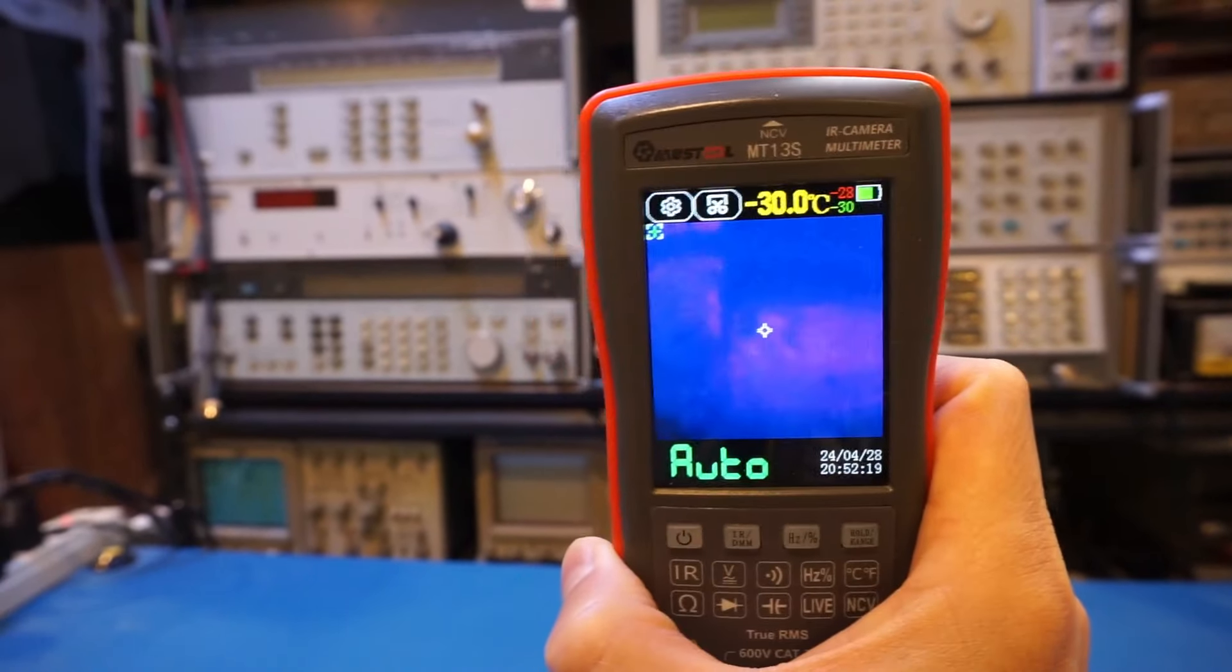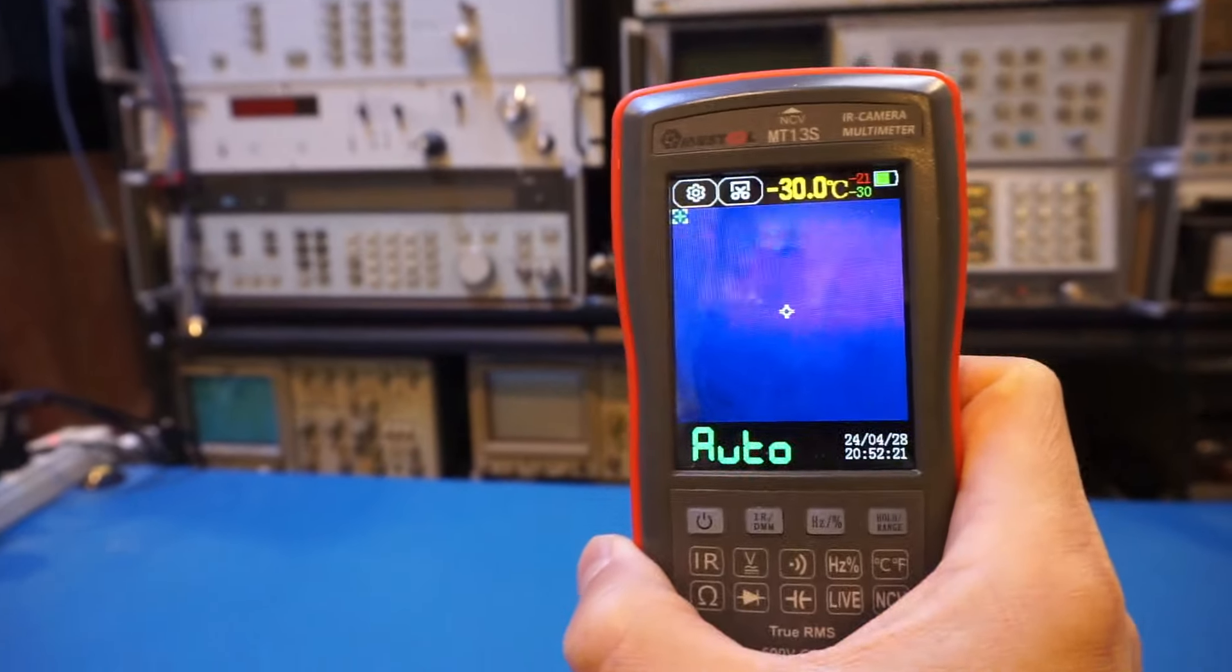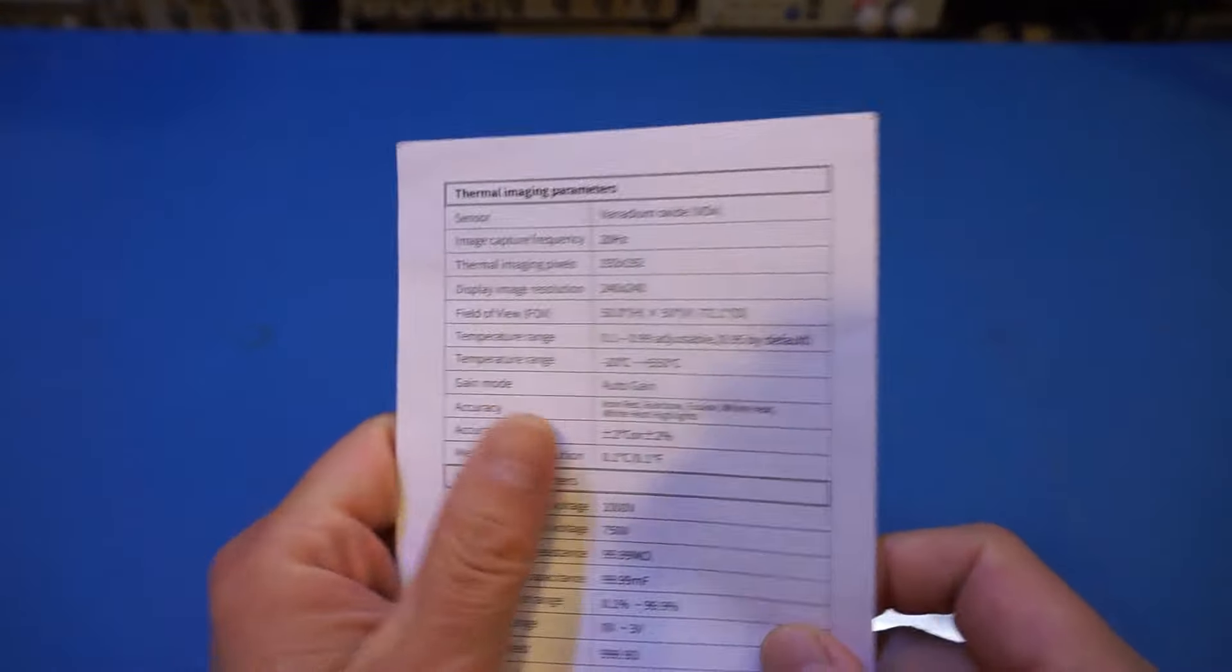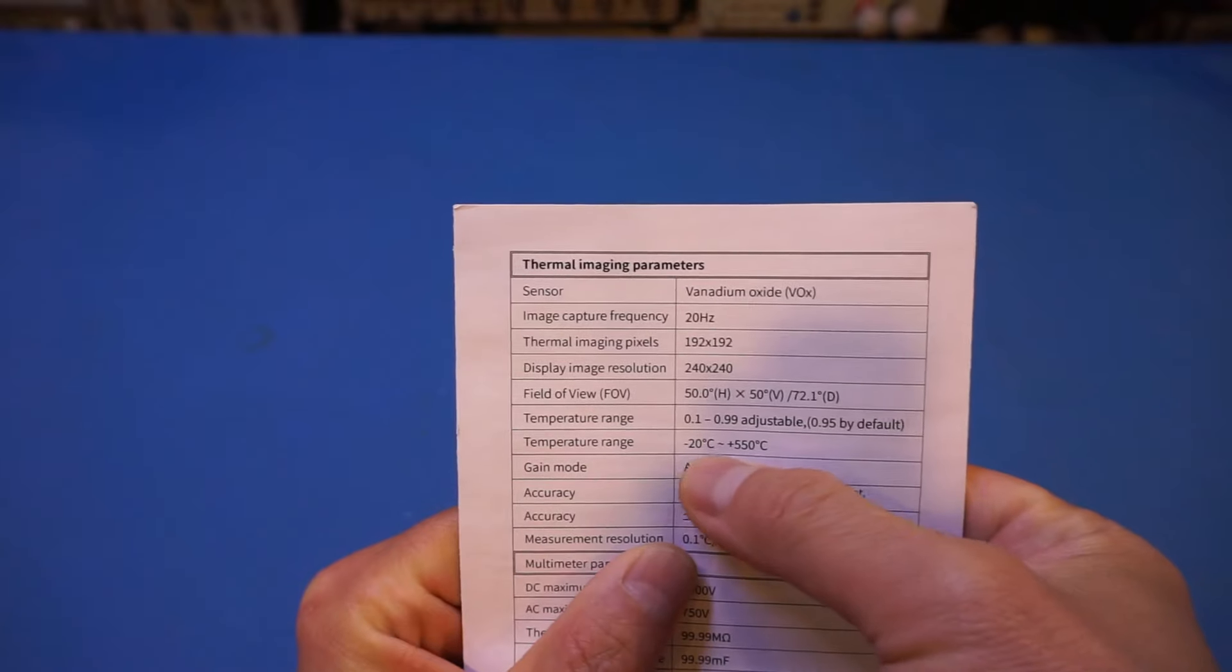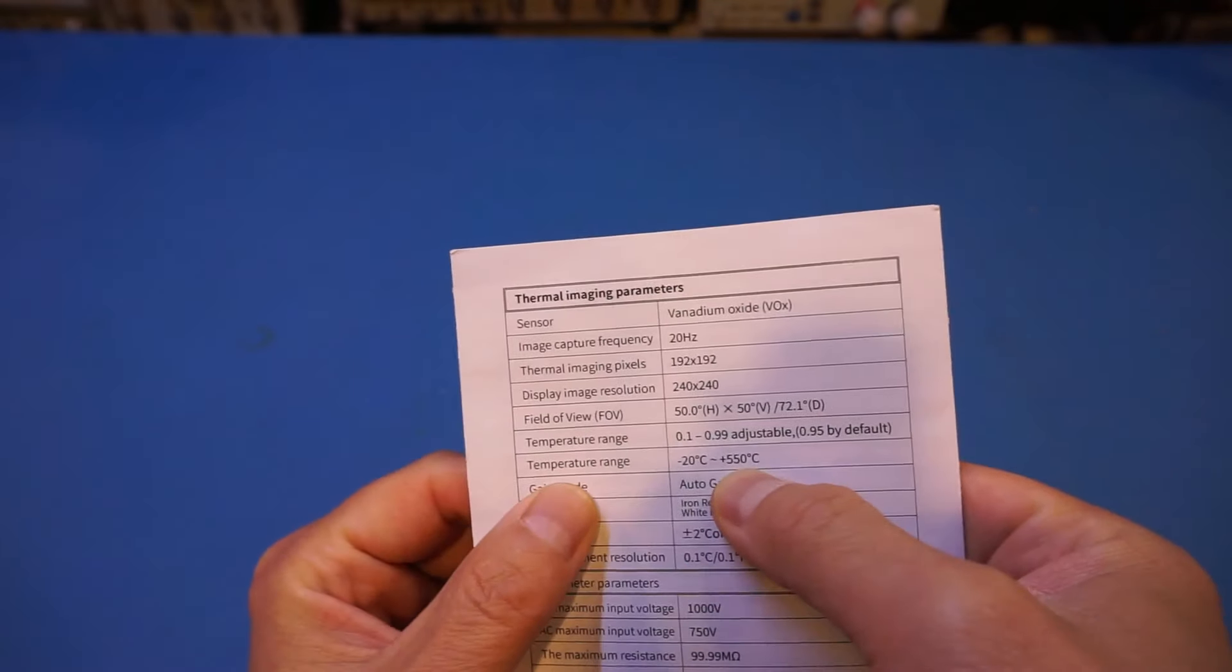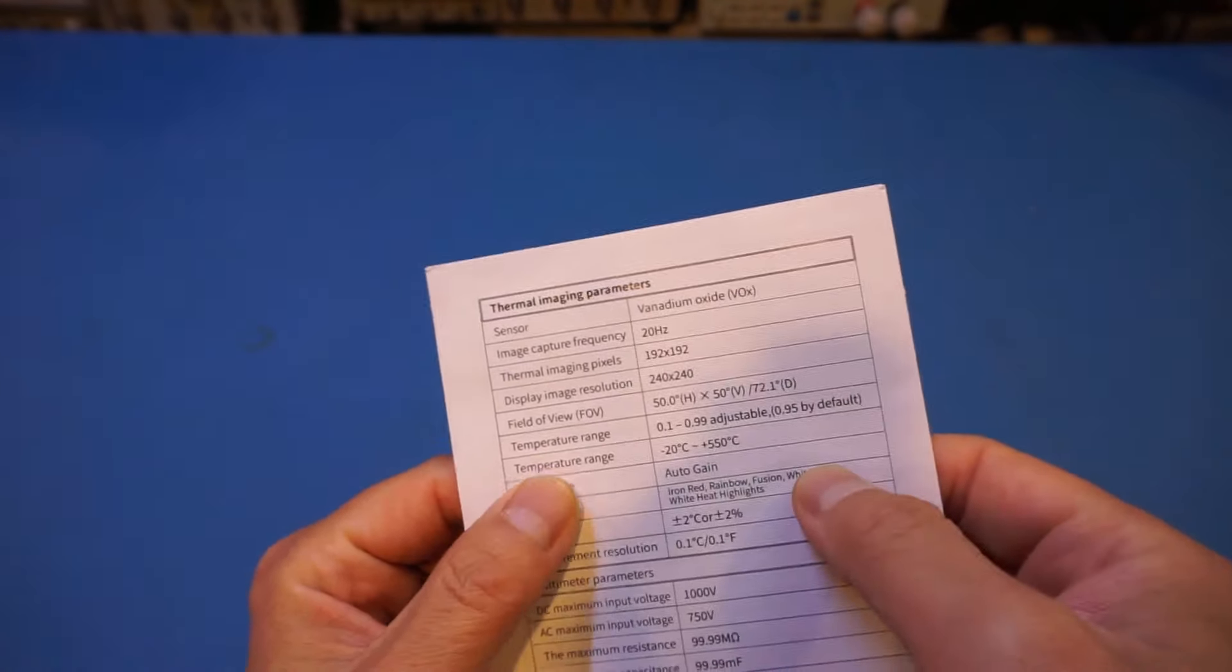Yeah, you're not able to see much. So this is definitely for higher temperature range. Now, if I take a look at the manual here, it actually didn't say much about where the cutoff temperature is. You can see here temperature range is minus 20 to 550 degrees. But it did not tell me which range is for what.